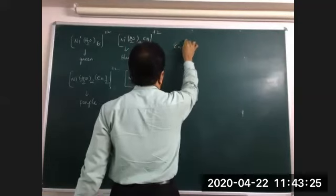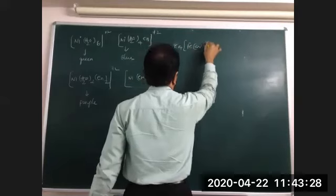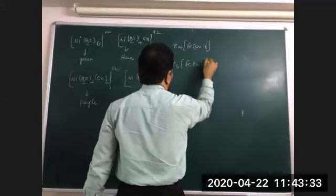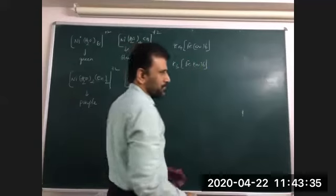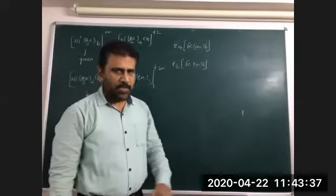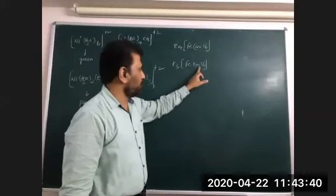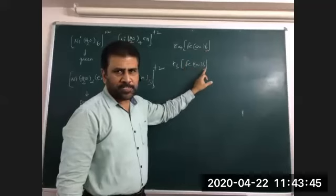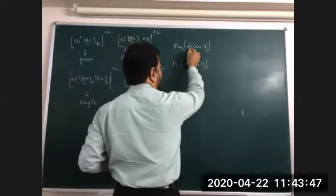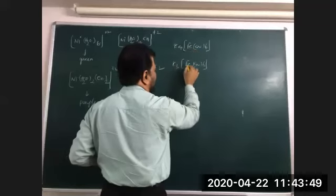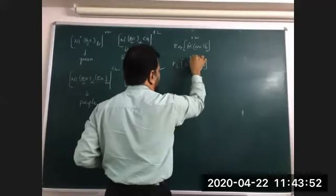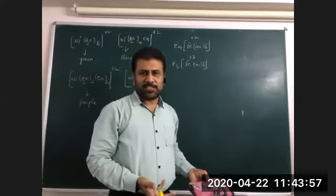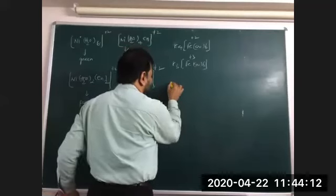K₄[Fe(CN)₆] and K₃[Fe(CN)₆] — are both colors the same or different? Definitely different, though ligands are the same. This is potassium ferrocyanate and potassium ferricyanate. In K₄[Fe(CN)₆], iron is in +2 oxidation state; in K₃[Fe(CN)₆], iron is in +3 oxidation state. If oxidation state changes, colors also change.